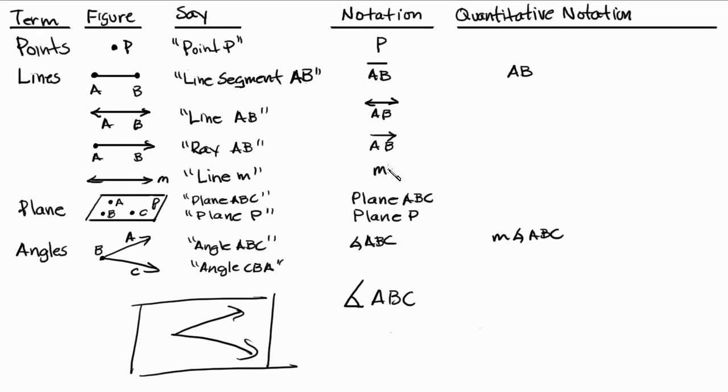Now, you have to be careful though, because we'll talk about it later. With examples I'll show you, but when you're talking about the measure of a certain angle, you write M, a little M in front of the angle sign and the ABC after it.